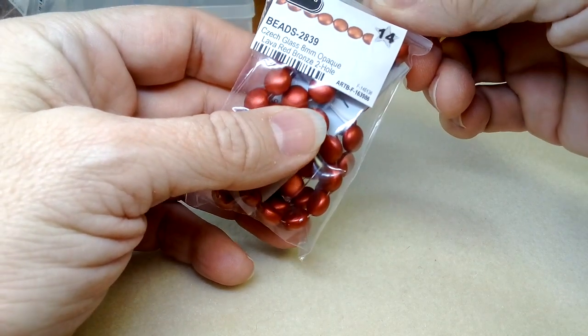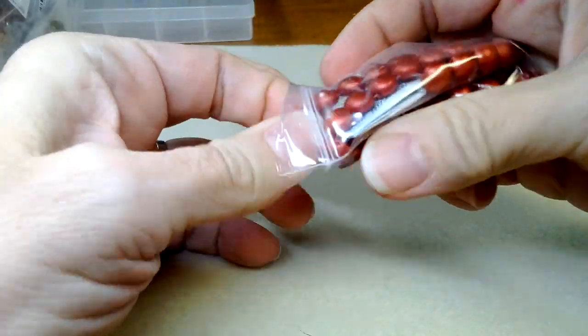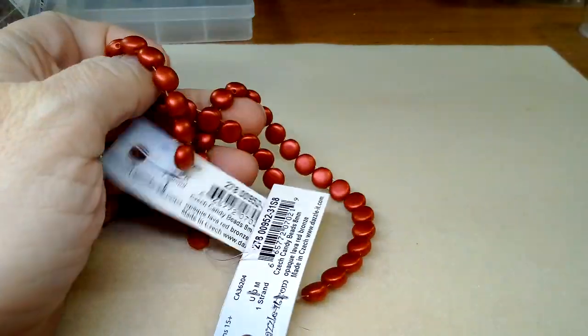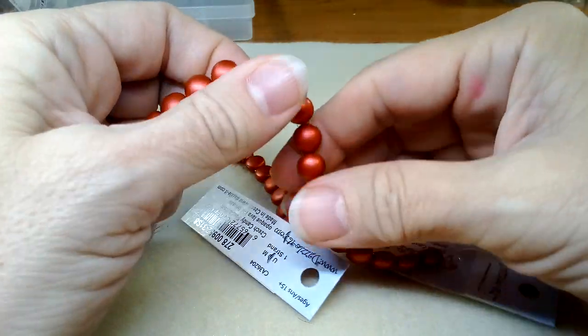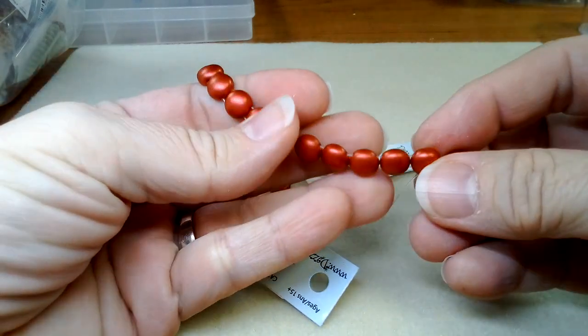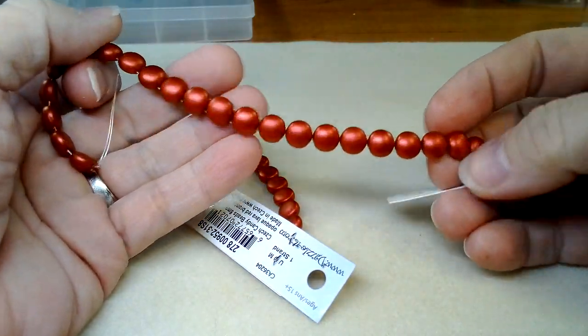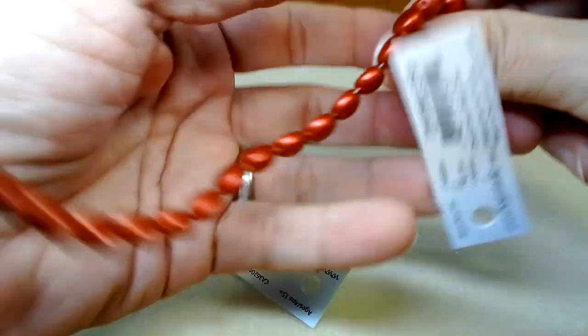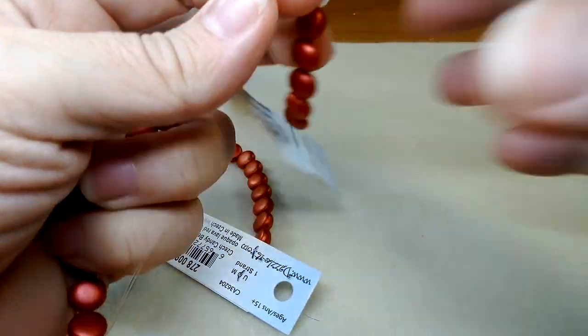These are eight millimeter opaque lava red bronze two-hole. They look amazing. I'm glad I got two. They feel really cool too, they're really shimmery and nice. That's going to make a beautiful bracelet. You can see the holes.